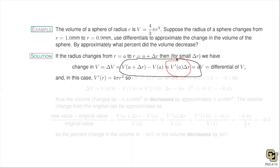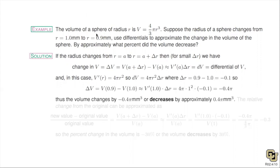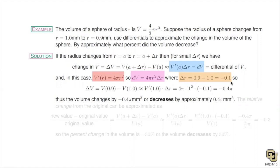Here's the main information: I calculate the differential. I know v prime is 4πr². The differential is v prime times Δr, where a is always the original starting value. So I calculate the differential: 4πr² Δr. Delta r is always the new value minus the original value — here it went from 1.0 to 0.9, so Δr = 0.9 − 1.0 = −0.1.